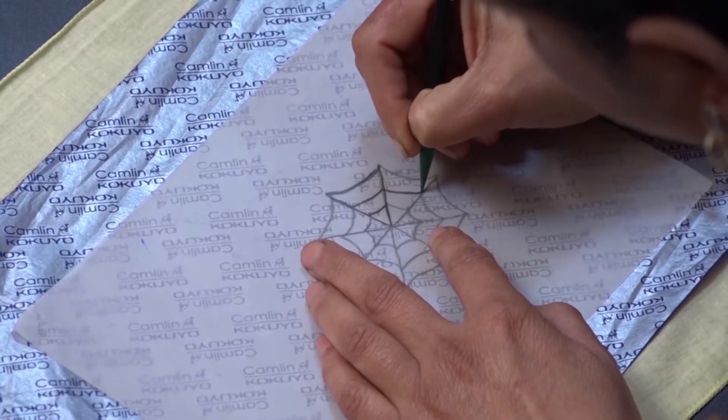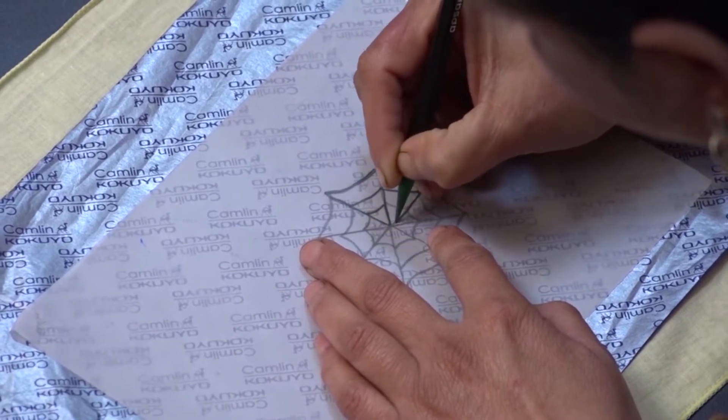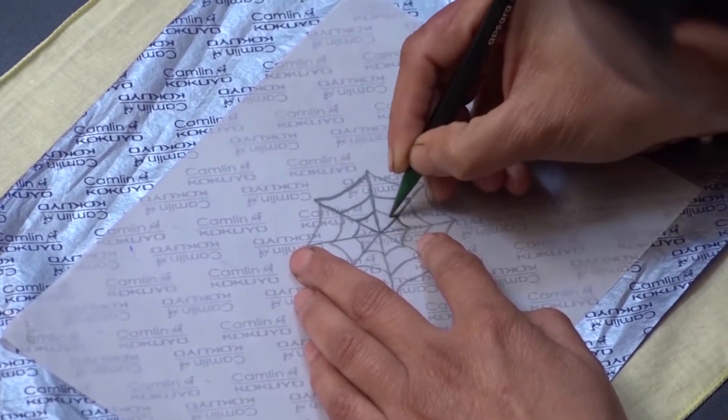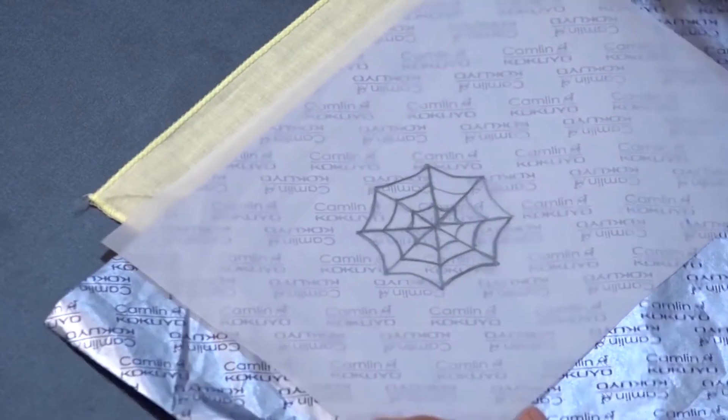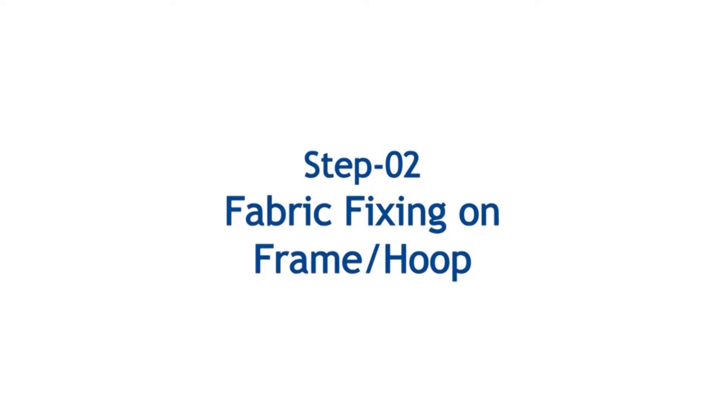If your design skills or sketching are good, you can directly trace your design onto the fabric. Now your design or motif is ready. Fix the traced fabric on the embroidery frame or hoop.